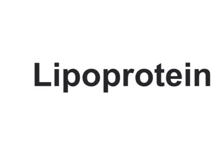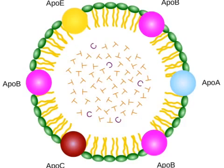A lipoprotein is a protein associated with a lipid molecule. Since lipid is hydrophobic and insoluble in water, the solution is to place the lipid onto a protein molecule so that the protein takes care of solubility and the lipid can be carried from one place to another through the blood. That is what a lipoprotein is about.